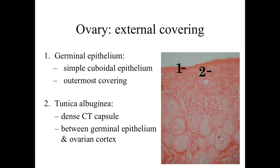To start out with, the ovaries are going to be an organ structure. If we take a look at the external covering, what we're going to have is a germinal epithelium, which is going to be a simple cuboidal epithelium — the outermost covering. This is a little different from what we've seen covering a variety of other organs, but essentially a simple cuboidal epithelium giving us a nice smooth surface along the outside. Underlying that, in area two on our diagram to the right, we're going to have the tunica albuginea — essentially a whitish layer, which is going to be a dense connective tissue capsule located between the germinal epithelium and the ovarian cortex. It's important to keep in mind that even though we've got this germinal epithelium around the outside, it doesn't have anything to do with the production of egg cells. It's essentially just going to be involved as a protective, smooth surface along the outside of the ovary.